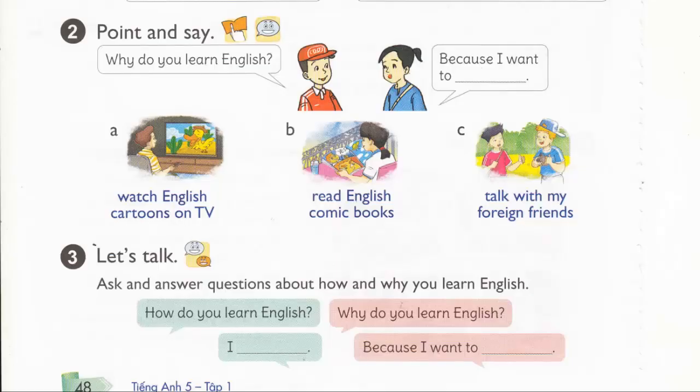Page 48. Activity 2. Point and say. A. Why do you learn English? Because I want to read English comic books. A. Watch English cartoons on TV. B. Read English comic books. C. Talk with my foreign friends.